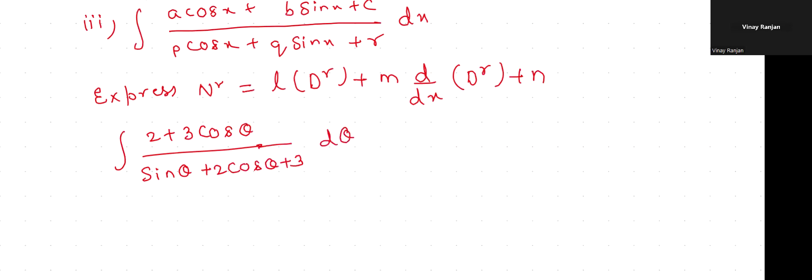Numerator, two plus three cos theta, equals l into denominator sin theta plus two cos theta plus three, plus m into differentiation of denominator. The differentiation of denominator becomes cos theta minus two sin theta.